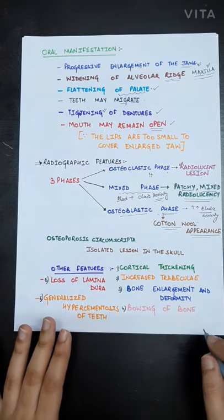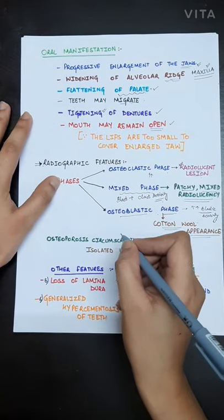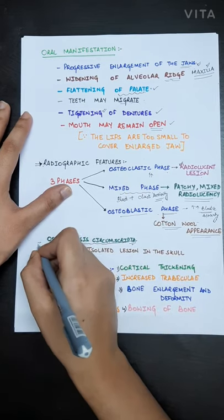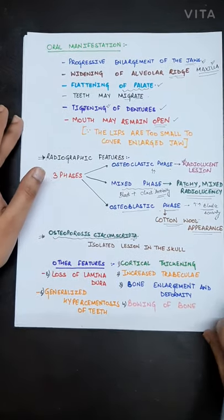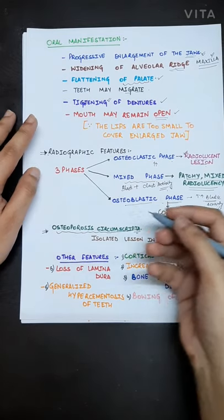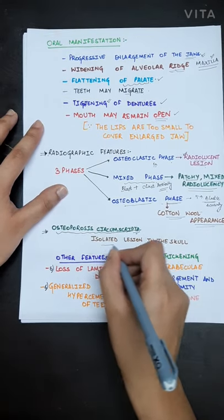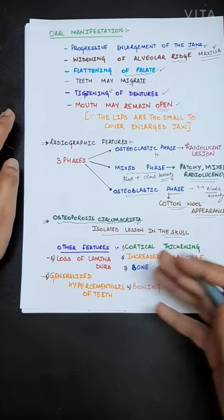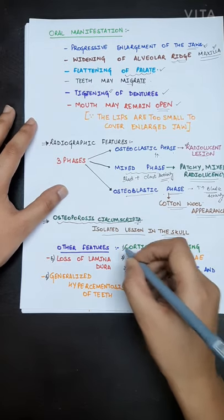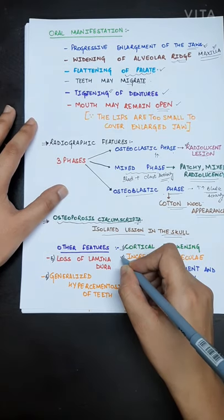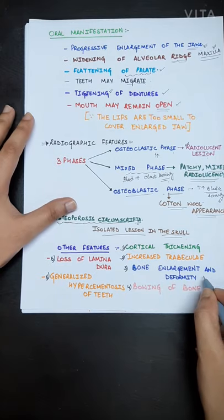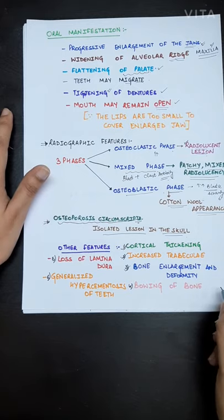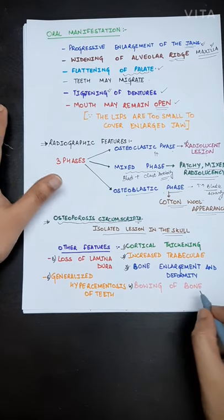The isolated lesion in the skull will give a typical osteoporosis circumscripta appearance in radiographs. Other features include cortical thickening, increased trabeculae, bone enlargement and deformity, and bowing of bones such as femur and tibia. The weight bearing bones will be bowed.